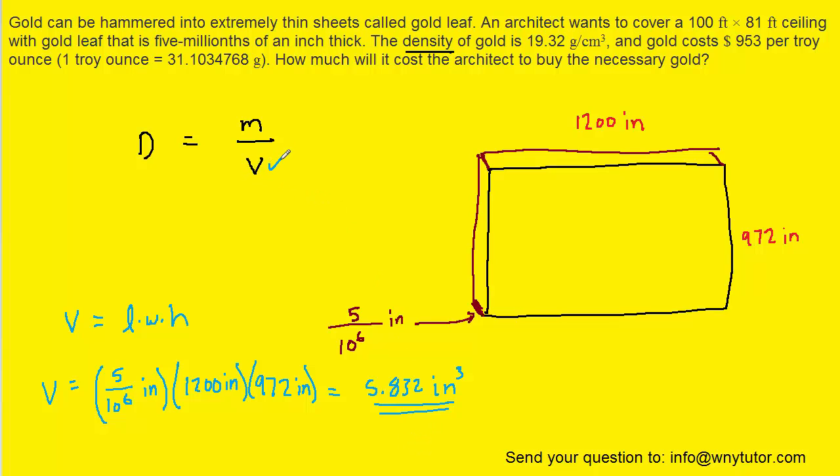This is the volume that we're going to need for our density equation. So we have the volume. The question gives us the density. We can now calculate mass. The only problem is that the density is given in terms of grams per centimeter cubed, whereas we have a measurement of volume of inches cubed. That's going to be problematic.